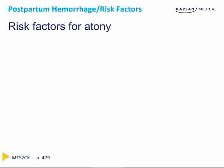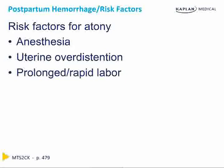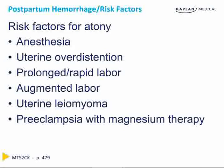Risk factors for uterine atony include anesthetic agents that prevent effective uterine contractions; an over-distended uterus prior to delivery, seen with macrosomic babies, twins, or polyhydramnios; prolonged or rapid labors; prolonged Pitocin augmentation causing receptor downregulation; uterine leiomyoma causing mechanical dystocia; and preeclampsia treated with magnesium therapy, as magnesium prevents smooth muscle contractions in the uterus.